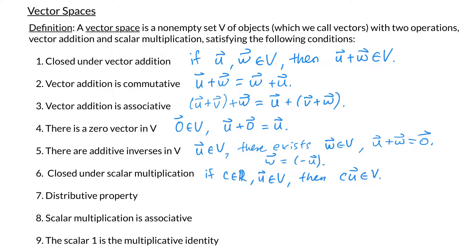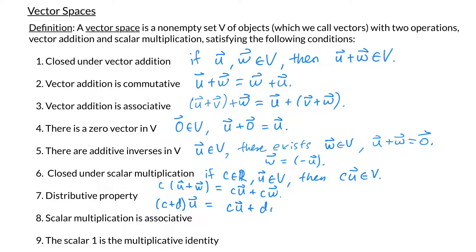Property 7 is the distributive property and there are two versions. If I have a scalar c and I multiply it with the sum of vectors u and w, then c distributes to give c times u plus c times w. In the second version, if I have two scalars c plus d and I multiply with the vector u, then u distributes to give c times u plus d times u.